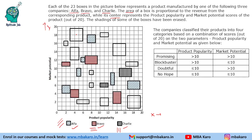The area of the box is proportional to revenue from the corresponding product. For example, if a box is 3 units by 3 units, its revenue is 9x, where x is the proportionality constant. The center of each box represents product popularity along the x-axis and market potential along the y-axis — for instance, a center at 4.5 popularity and 18 market potential.